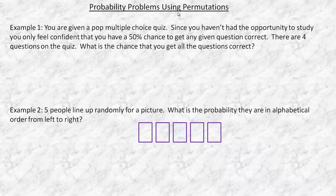So the first one we're going to look at just with probabilities, and there is a way to do this first one with permutations too, but we're not going to bother with that. In the first one you're given a pop multiple choice quiz. Since you haven't had the opportunity to study, you only feel confident that you have a 50% chance to get any given question correct. There are four questions on the quiz. What is the chance you get all the questions correct?